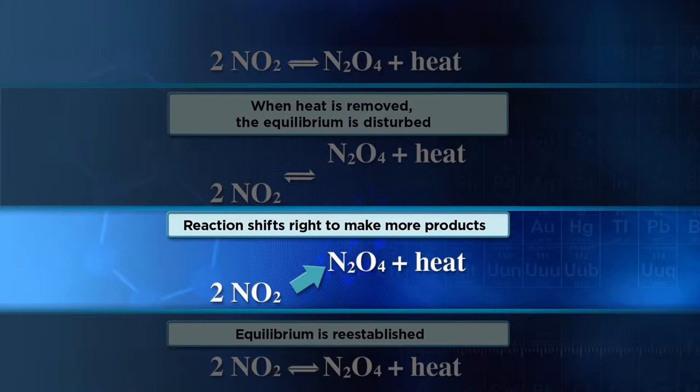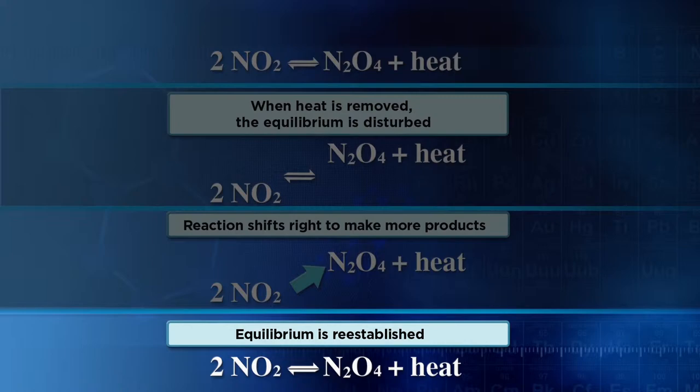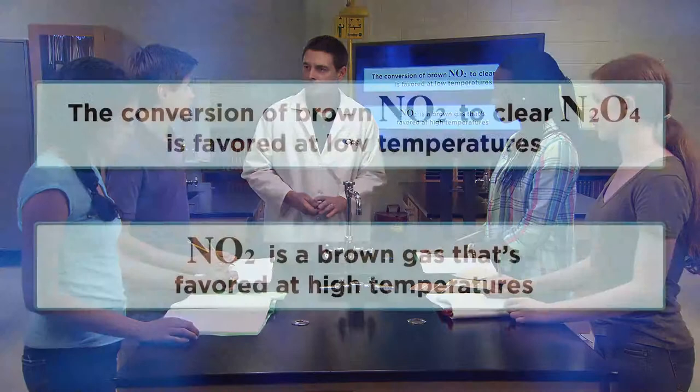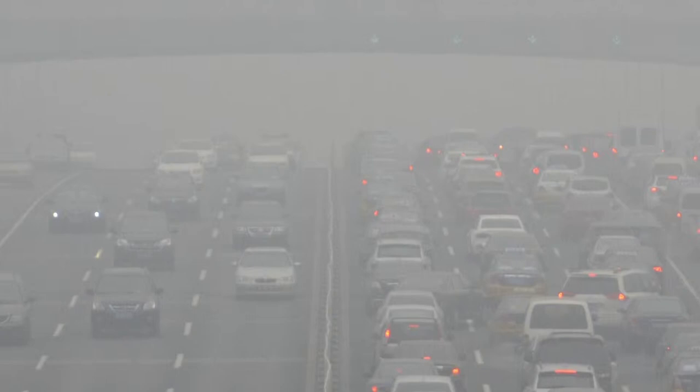That's exactly right. So let's summarize our conclusions. The conversion of brown NO2 to N2O4 was favored at low temperatures. And NO2 is a brown gas that's favored at high temperatures. And that's why we see smog on hot summer days. The high temperatures shift the equilibrium towards NO2, the brown gas. Excellent.